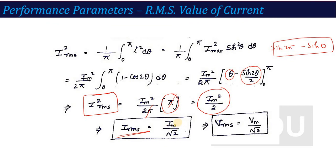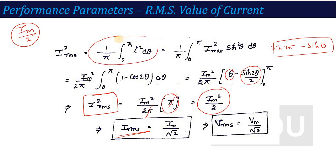If you remember, in the half wave rectifier the RMS value was Im/2. The derivation process is the same for both half wave and full wave — the only change is the time period in the first step. In half wave, the time period goes from 0 to 2π; in full wave, the time period is 0 to π. Once these two values — average and RMS — are calculated, the remaining parameters can be easily derived.